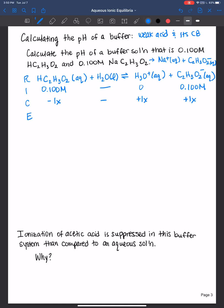And what we're really curious about are the concentrations at equilibrium. So we add up the initial and the change. We get 0.100 minus, and then minus 1x would be minus x.